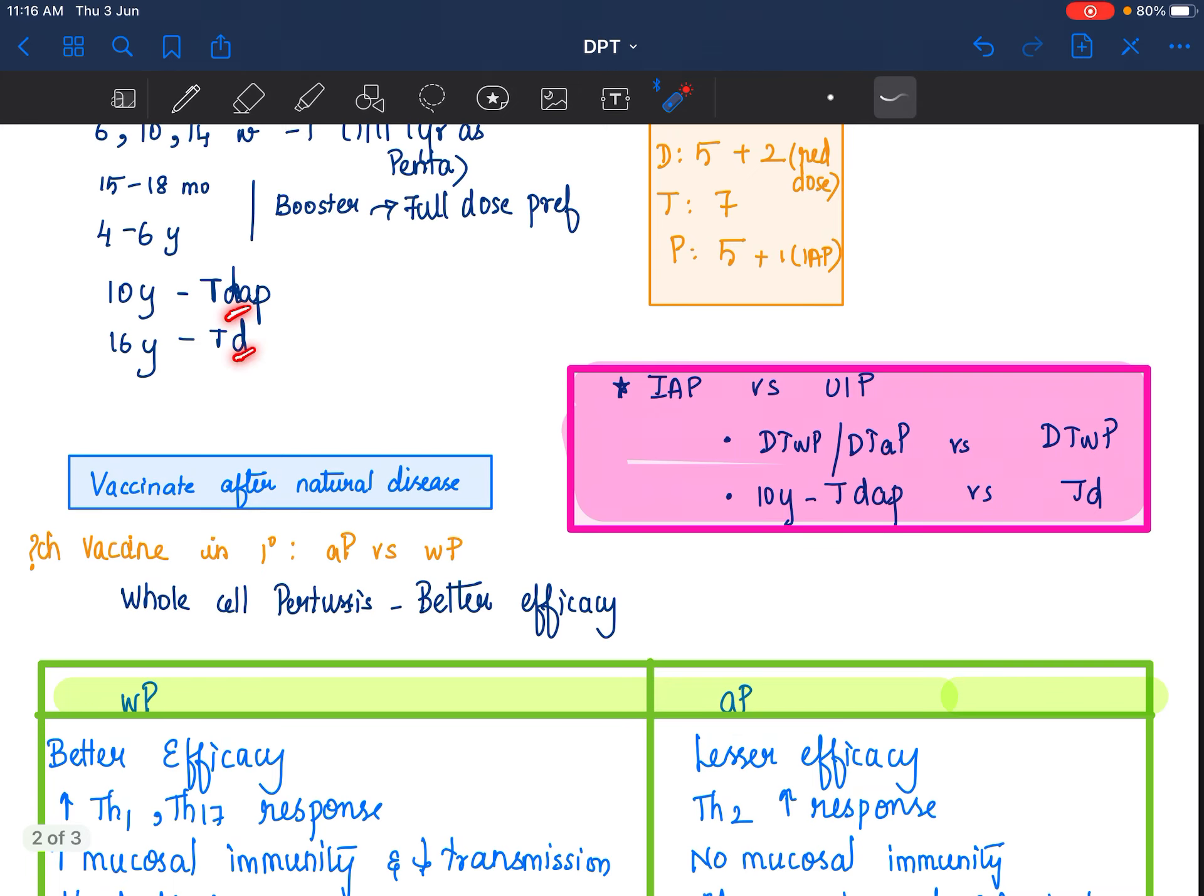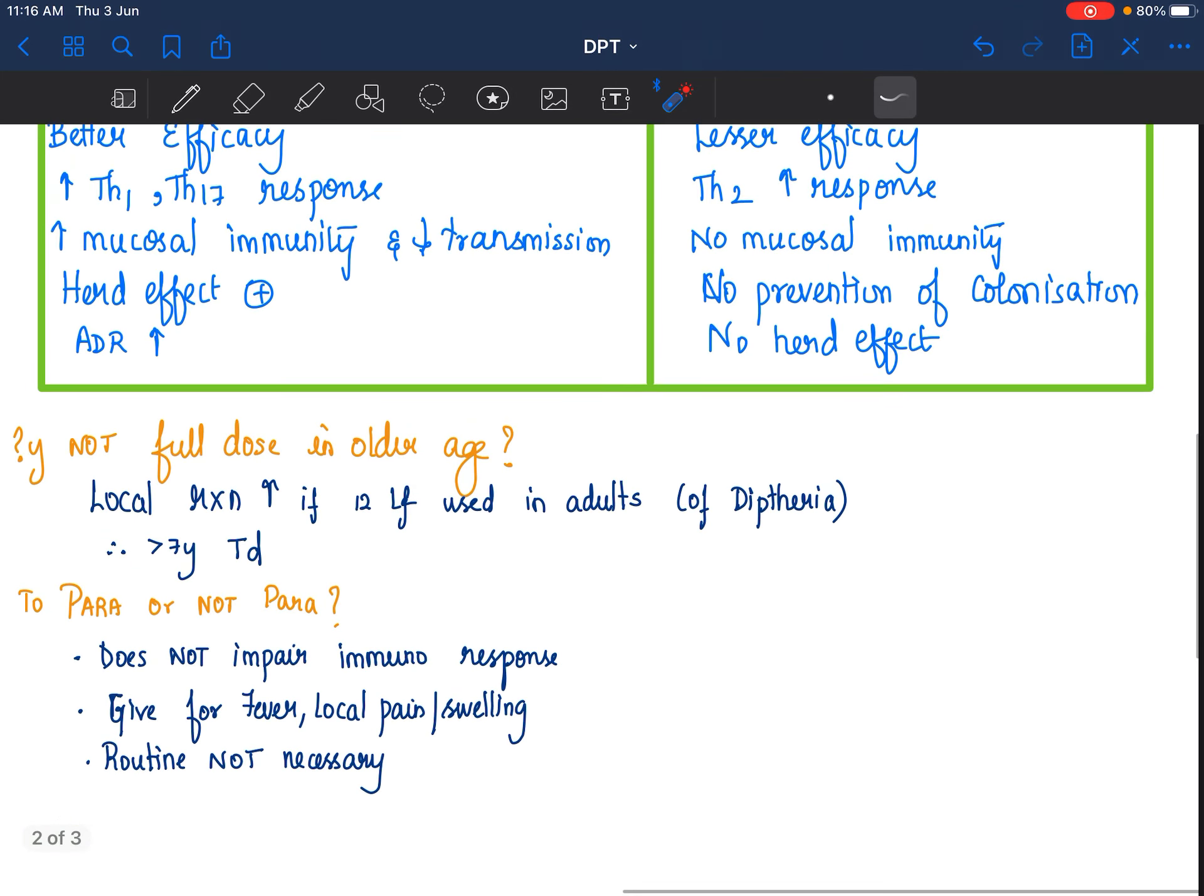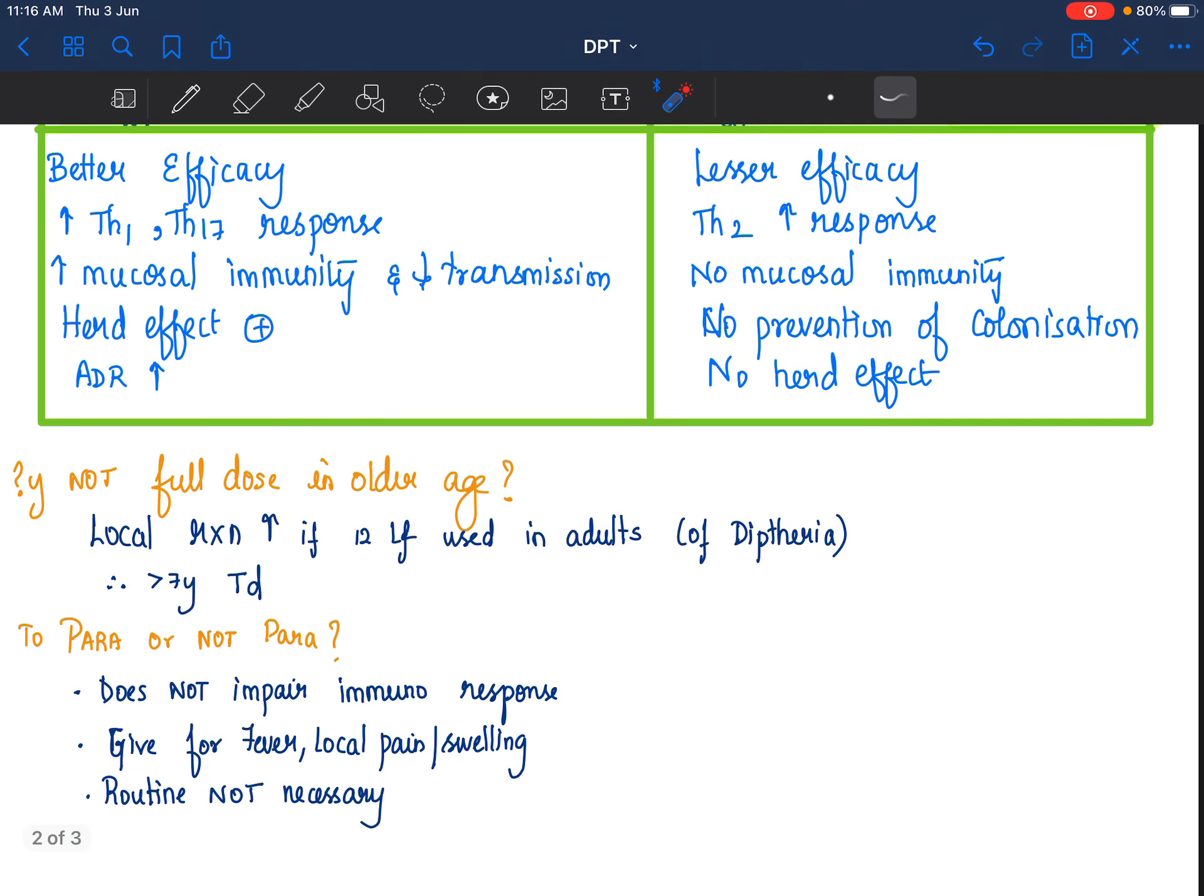Why are we giving reduced doses of diphtheria? The reason is local reaction, reactogenicity is increased if 12 units are used of diphtheria in adults. That is why more than 7 years, we use a reduced dose of diphtheria and don't give the complete DPT.